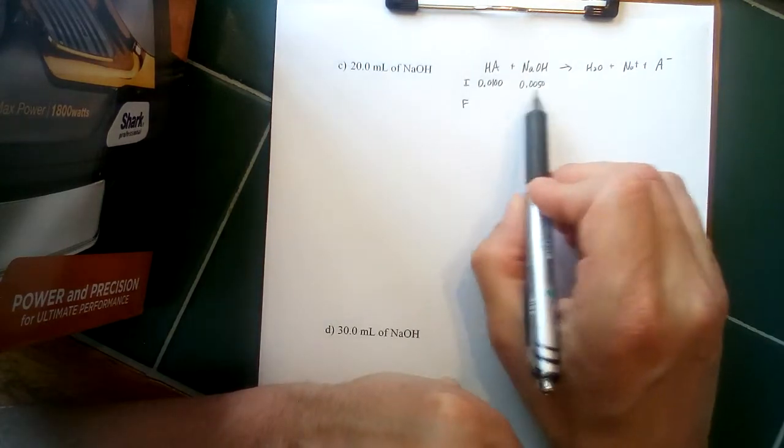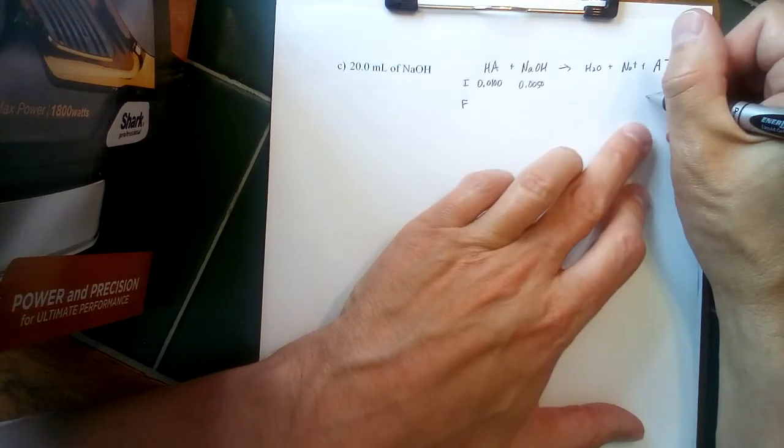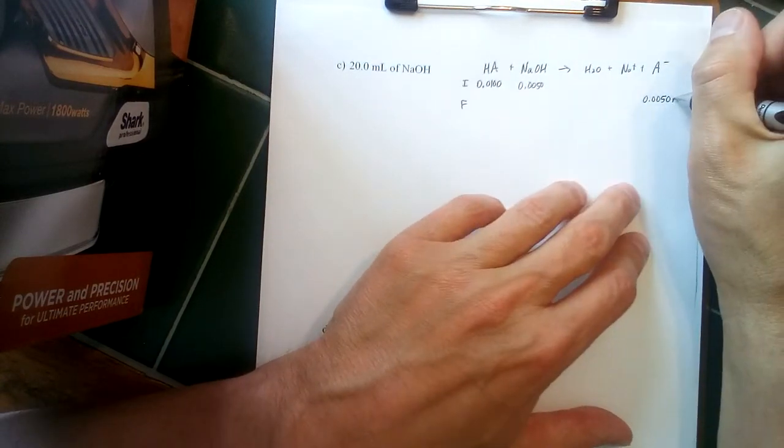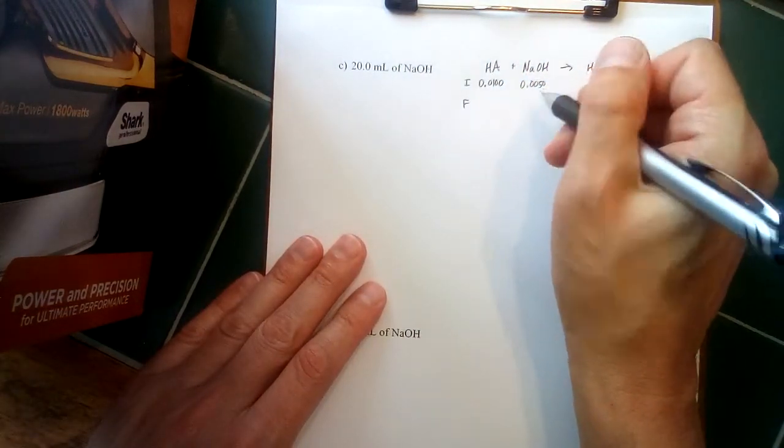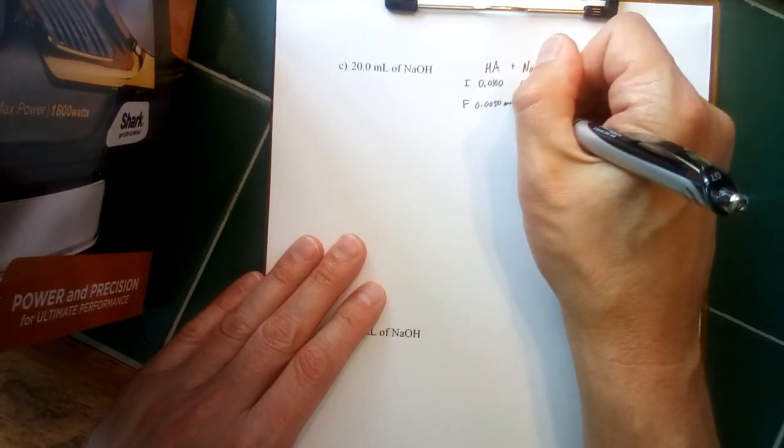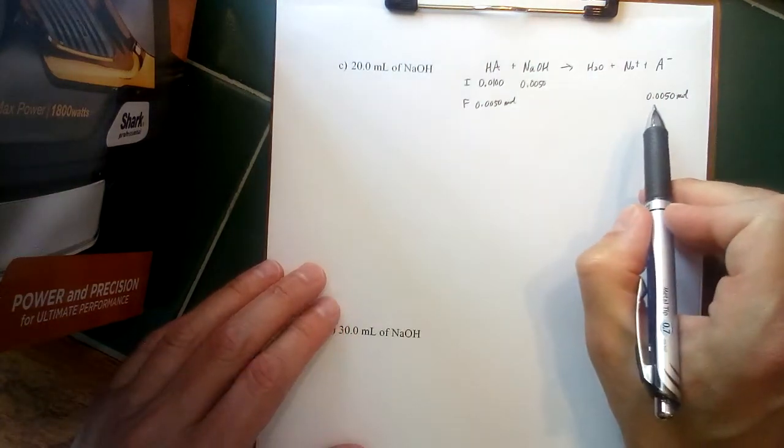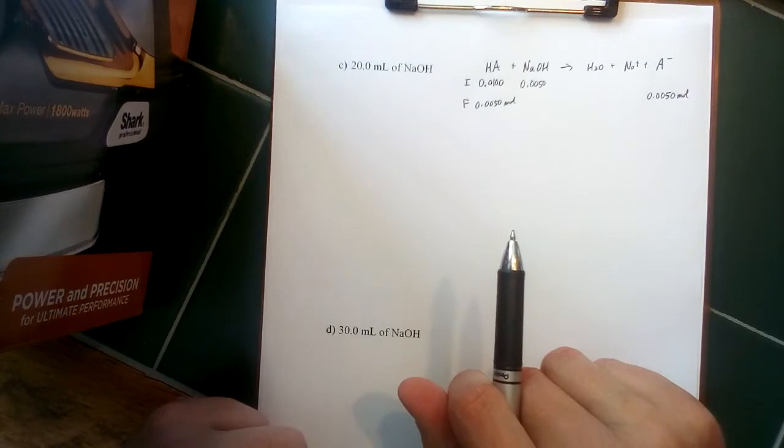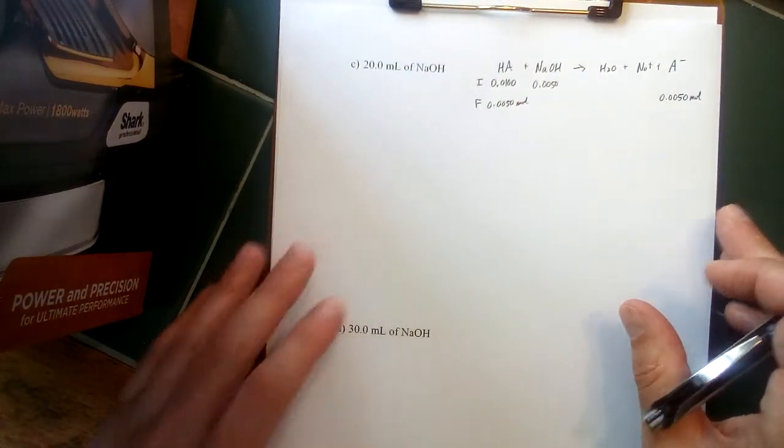Now in this case, sodium hydroxide is still the limiting reactant, but that means this time we're going to get 0.0050 moles of the conjugate base, and 0.01 minus 0.005, we're also going to have 0.0050 moles of the weak acid leftover. That's an important thing to recognize in a problem—we'll see why in a minute. But when those values are the same, that really simplifies things, and that's maybe an important part of a titration to be on the lookout for.